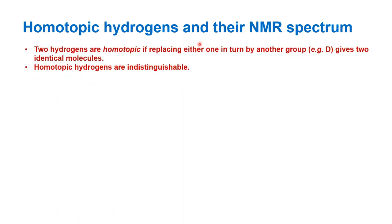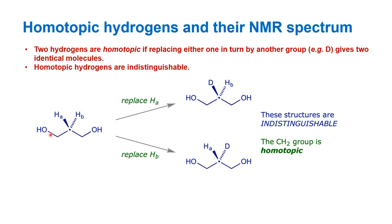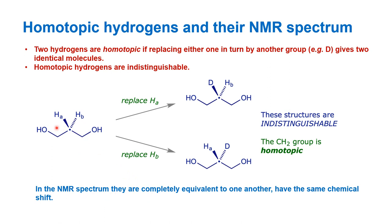Let us see homotopic protons in NMR spectrum. Two hydrogens are homotopic if replacing either one in turn by another group gives two identical molecules. So homotopic protons are indistinguishable from each other. In this example, HA and HB are methylene protons. If HA is replaced by D you get one molecule; if HB is replaced by D you get the same molecule. Both give the same spectrum, so in NMR you will get only one signal due to the two protons.